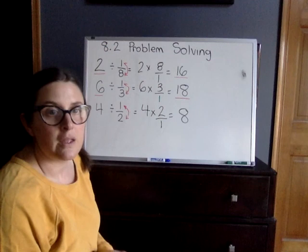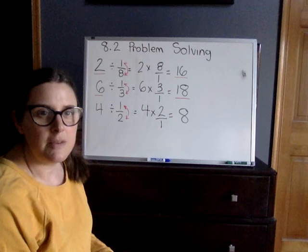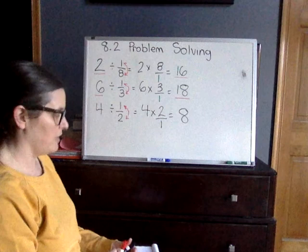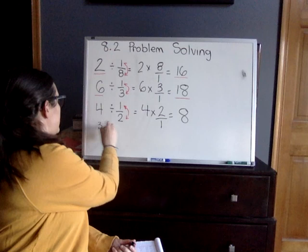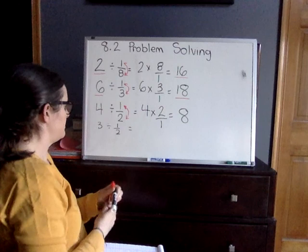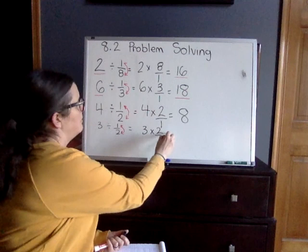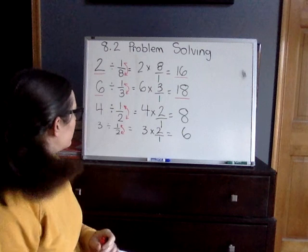Number five: Madeline has three watermelons that she cuts into halves to give to her neighbors. How many neighbors will get a one-half size piece of watermelon? So we have three watermelons divided by 1/2. After we flip our fraction, we end up with 3 times 2/1, which is 6. We have six pieces of watermelon.